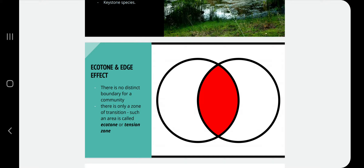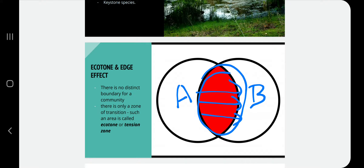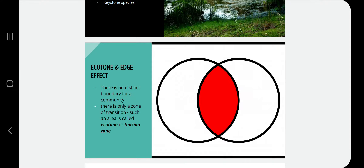If you are taking two different communities, we can see that there is no distinct boundary between them. We cannot clearly say where one community is ending and another is starting. In nature there is no clear-cut boundary between two communities — there is always a zone of transition, transiting from community A to community B, and this zone of transition is called an ecotone.